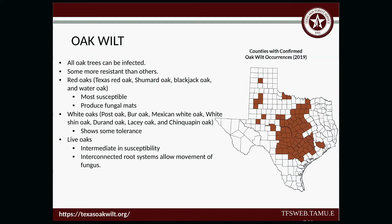Regarding fungal mats — what does that look like? The fungal mat is underneath the bark. It sounds kind of hollow when you hit on it. It takes a while for the bark to actually fall off. If you pass by a red oak and start smelling something sweet, that's a sign — you should not be smelling something sweet in the middle of a forest. If you tap on the oak, you can normally find it. The map on screen shows the current counties that have confirmed oak wilt cases — samples have been taken to the lab and confirmed, and then documented.